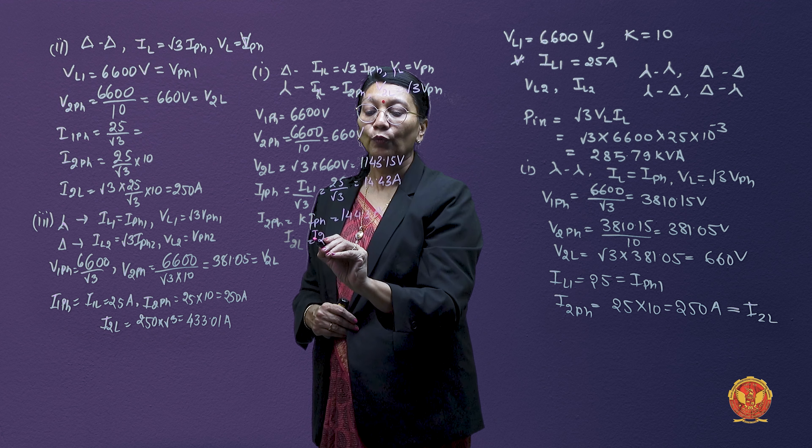We need to keep in mind that in a star connection, the phase and line voltage and current ratios differ from a delta connection. Once you know these relations for phase and line quantities, any such numerical problem becomes straightforward to solve.